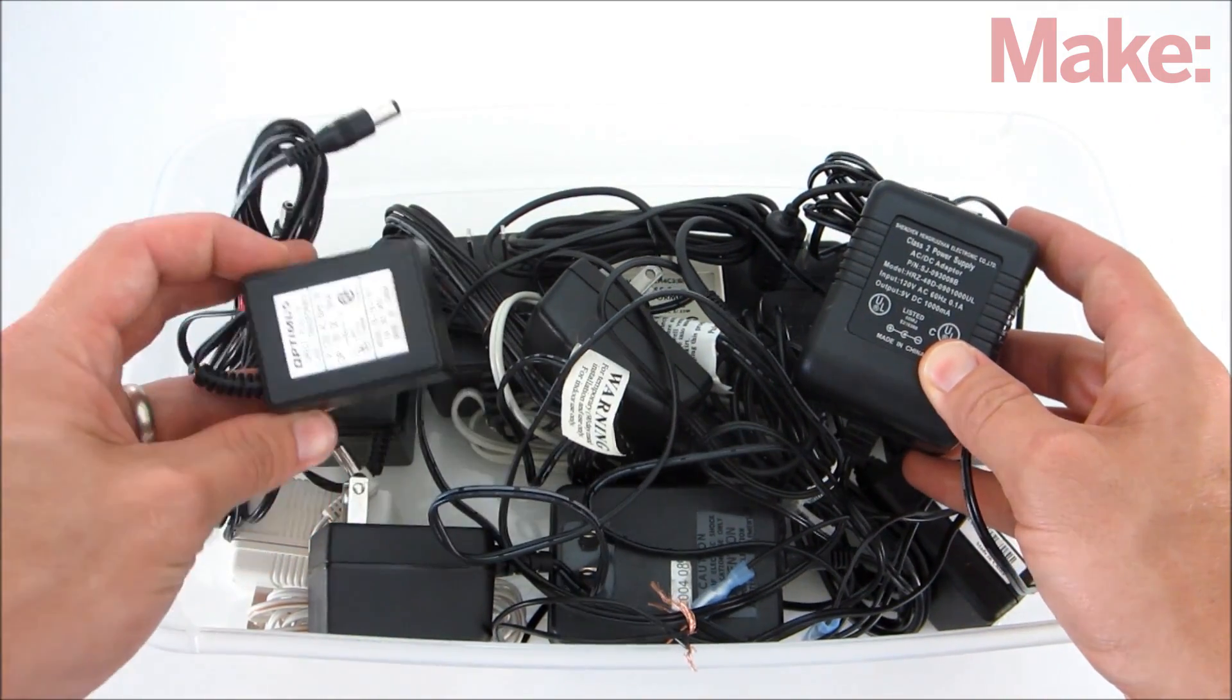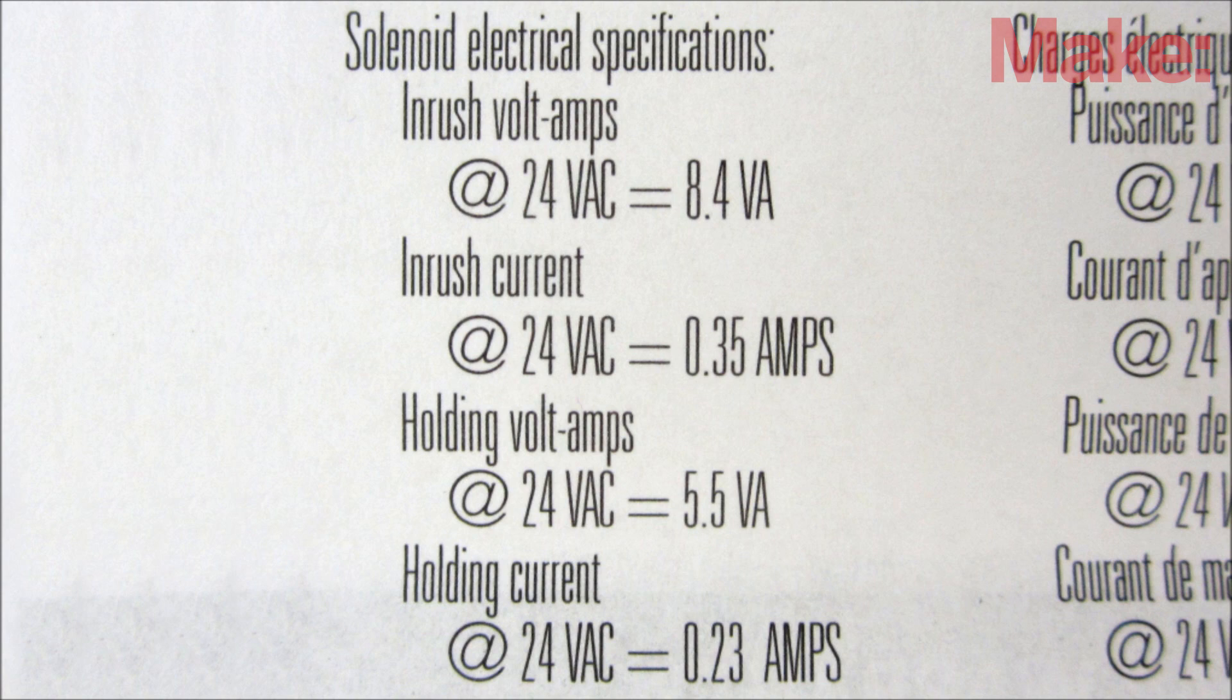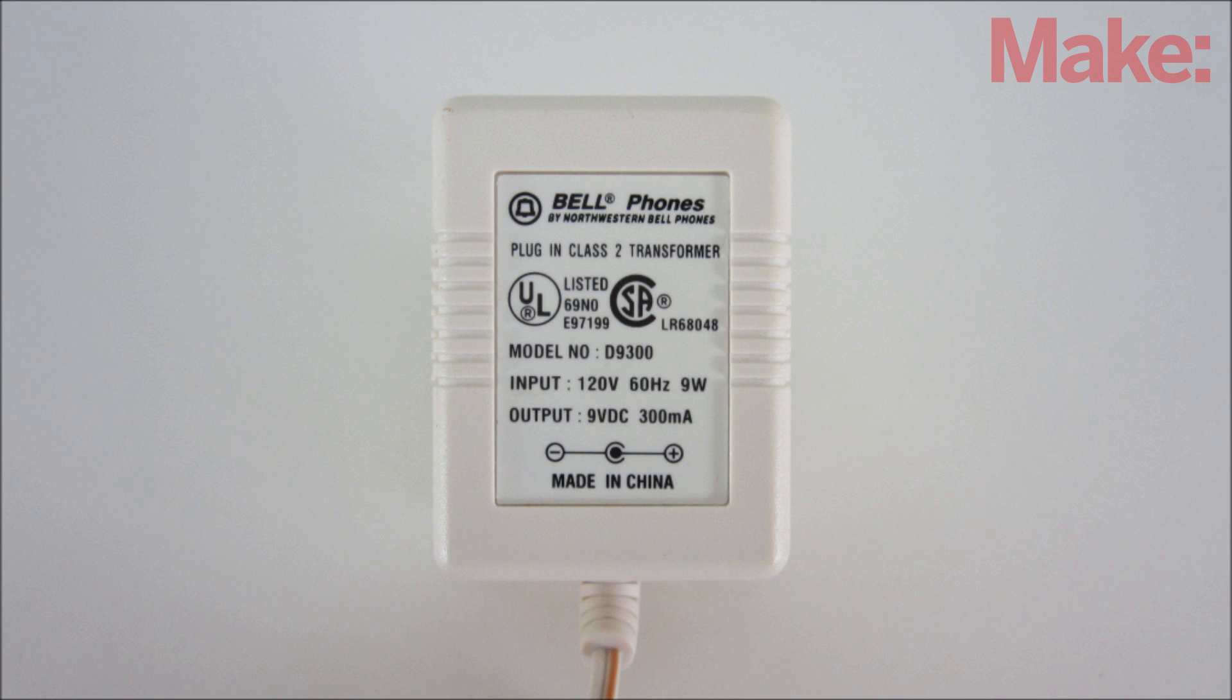Now you need to find an AC power adapter that can activate your sprinkler valve. Most sprinkler systems use a 24 volt AC signal to activate the valves, but other voltages can also work. I was able to activate the valve using power adapters that were rated as low as 9 volts.